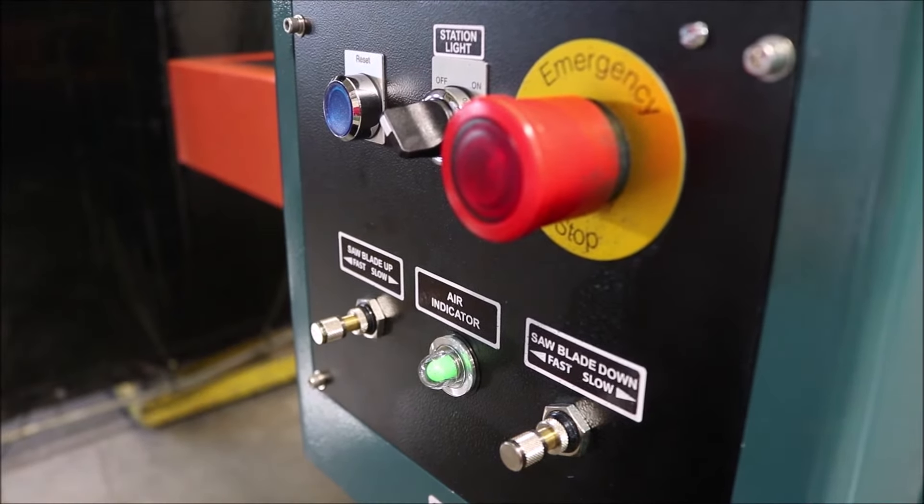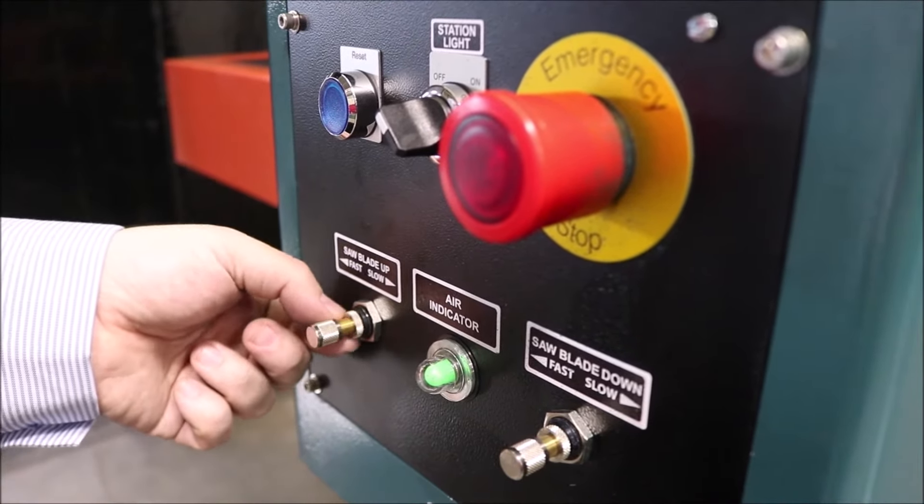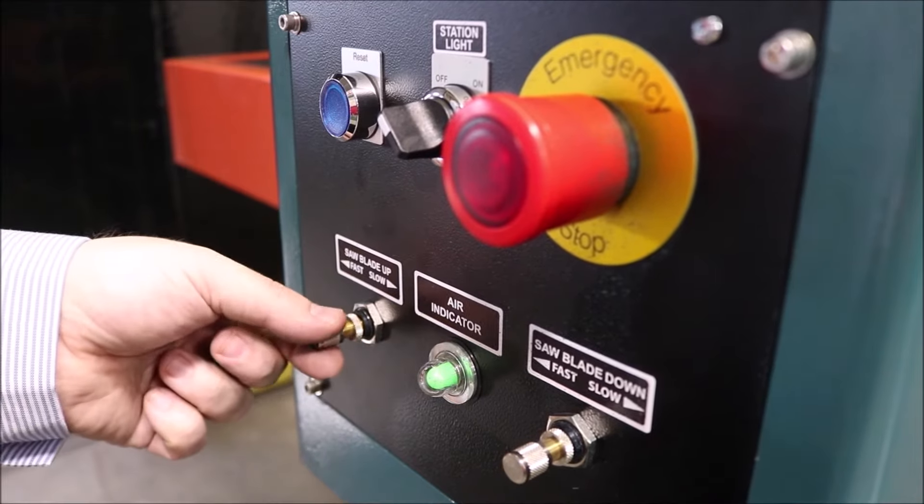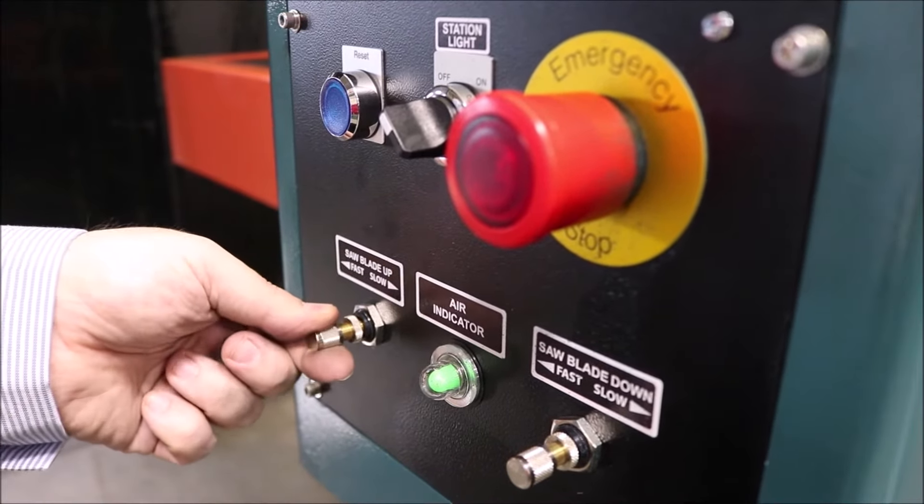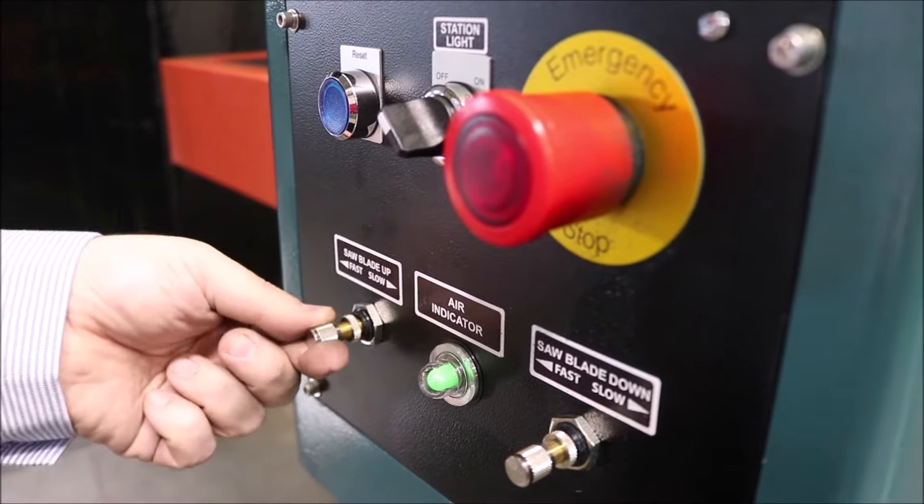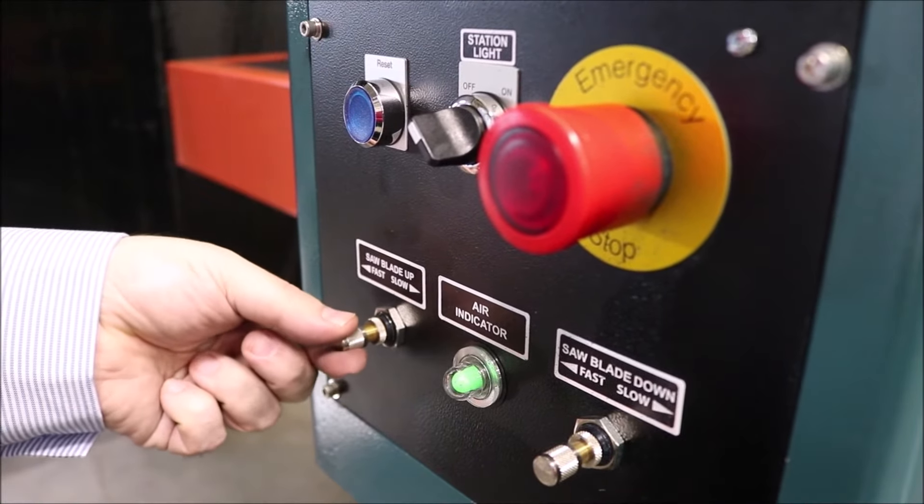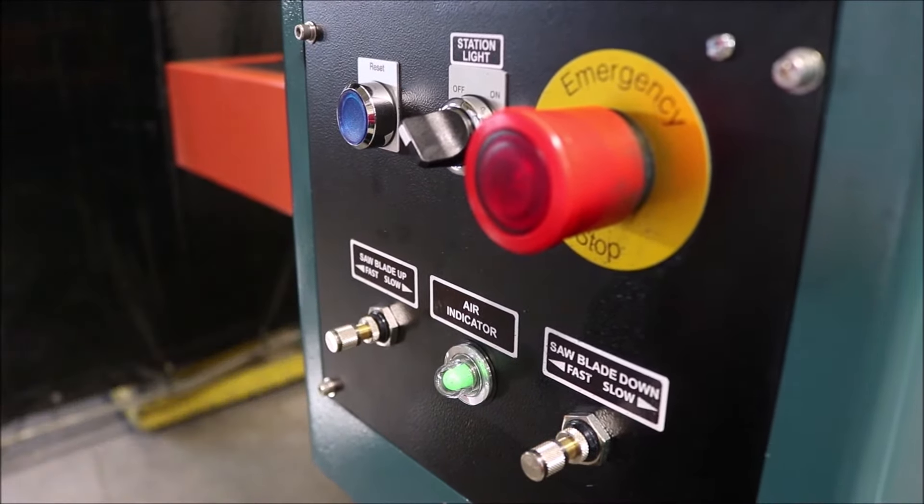To adjust your controls, you undo your locking nut and then you adjust either by making the cylinder go faster or by screwing it to go slower. And these are the adjustments.